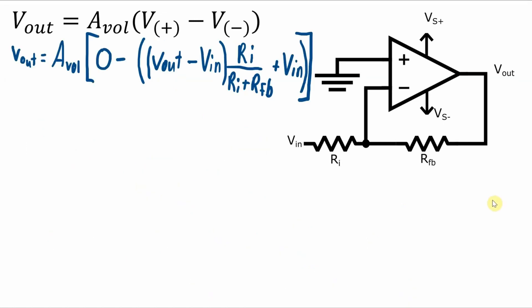So basically what I need to do now is a bunch of algebra so that I end up with an equation of VOUT over VIN equals something. So let's start by distributing VOUT minus VIN through these expressions here.